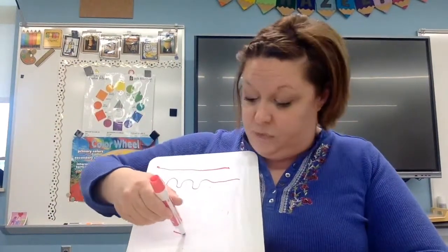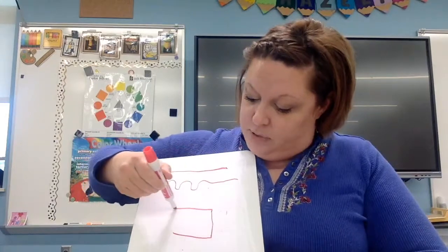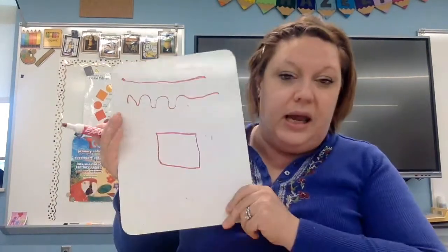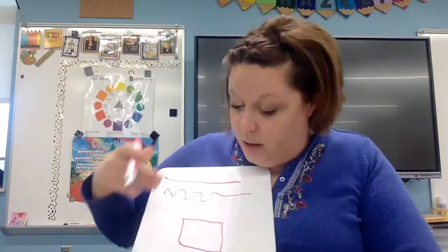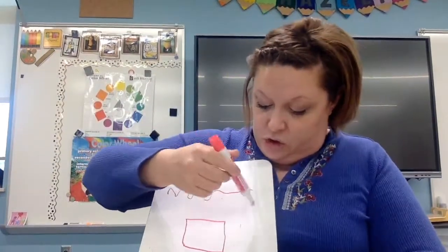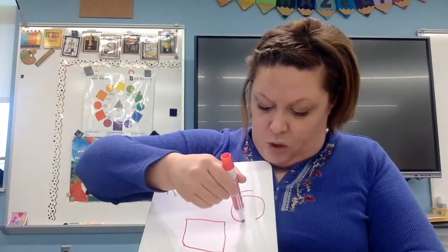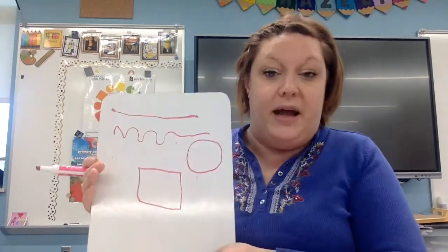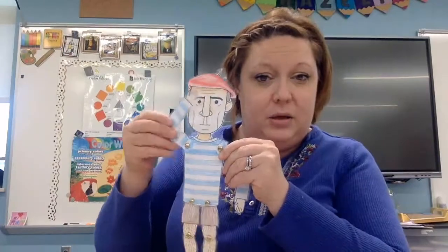Now lines can do another really cool thing: when a line starts and stops back where it started, it creates a shape. So this shape is called a square. If I started here and went all the way around and walked to where I started, that is called a circle. So today we are going to learn from a famous artist named Picasso.